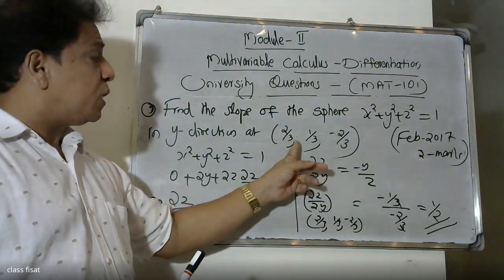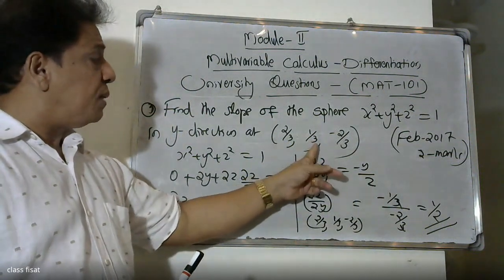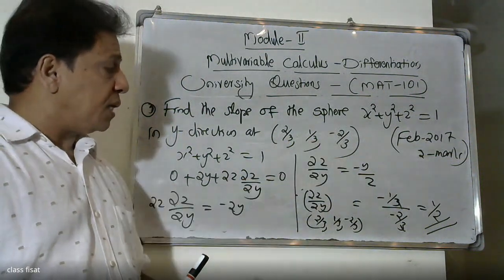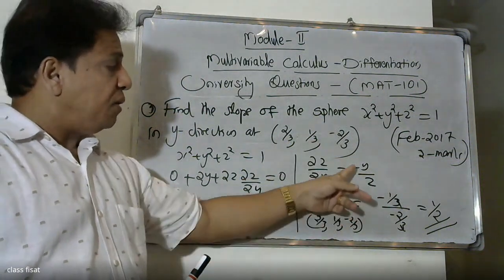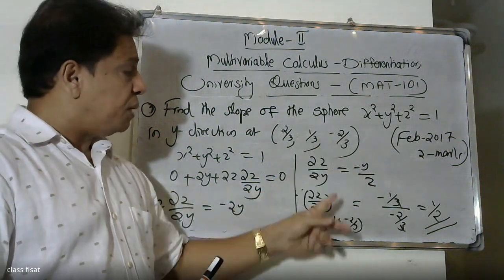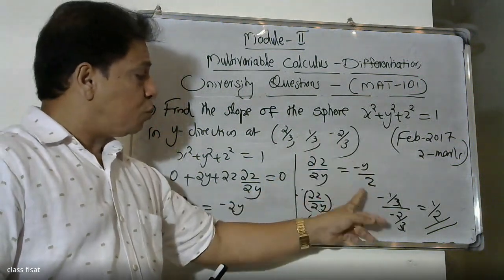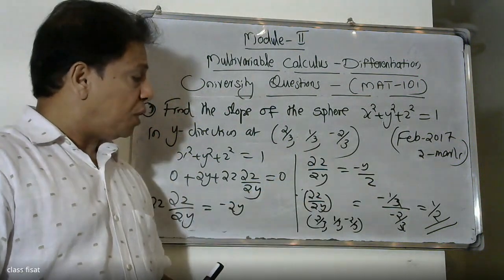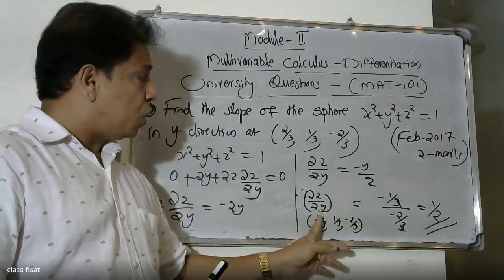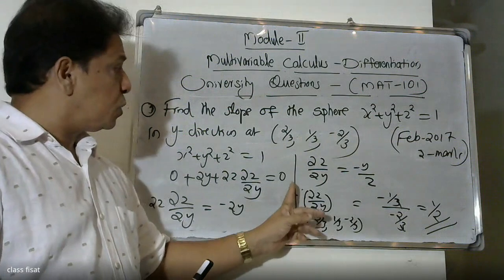Substituting: y equals 1/3, z equals minus 2/3 into dou z by dou y equals minus y by z. The answer is minus (1/3) divided by (minus 2/3), which gives 1/2. So the slope of the sphere in the y-direction at the given point is 1/2.